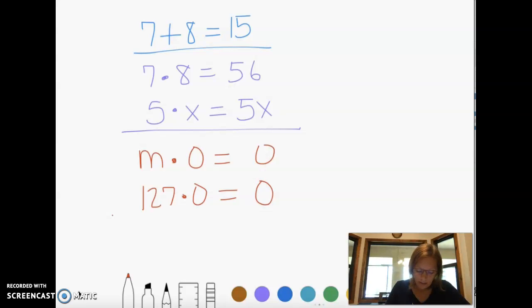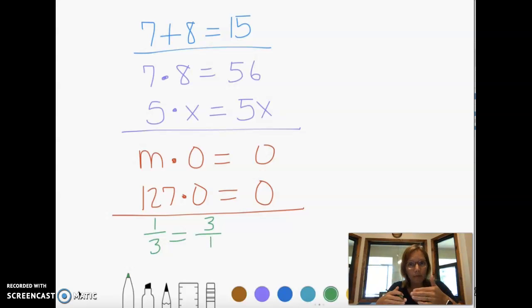Then the last thing in this section on identity properties is reciprocals. Reciprocal is just a fancy word for the flip of a number. And usually when we're talking about fractions, we're either flipping a fraction or we're taking a whole number, putting a 1 on the bottom, and flipping that into a fraction. So I'll give you a couple examples of that. The reciprocal of 1/3 equals 3 over 1. All I did was flip that fraction.